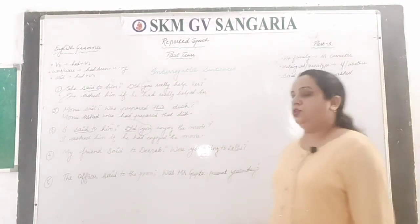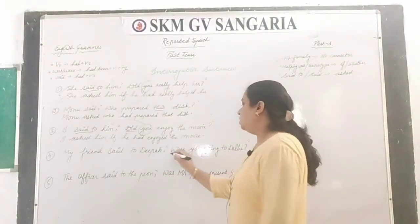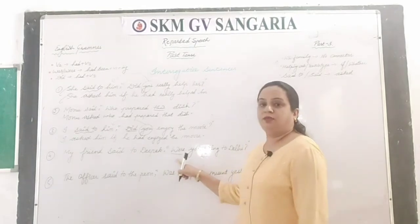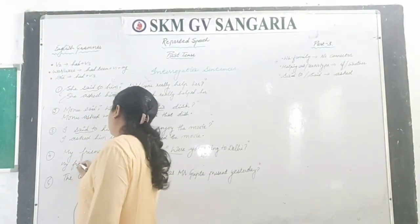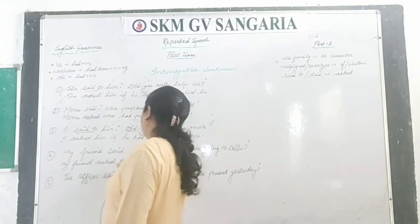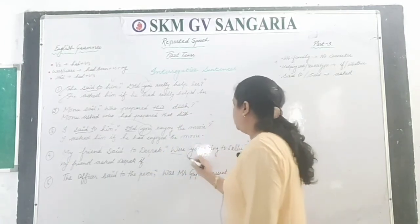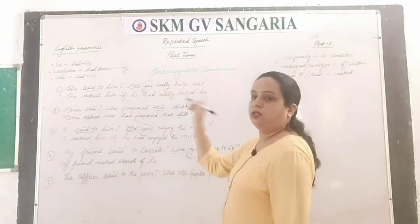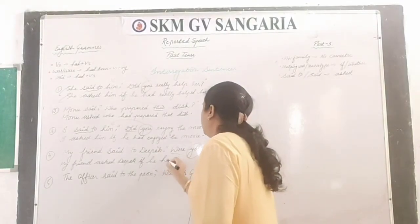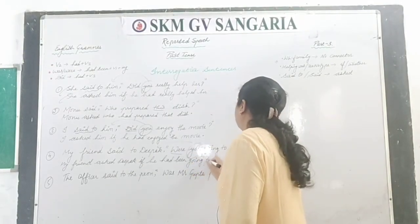My friend said to Deepak, 'Were you going to Dali?' This starts with a helping verb, not WH-family. Answer: my friend asked Deepak if — 'you' changes to 'he', Deepak is 'he'. 'Were going' changes to 'had been going'. Answer: my friend asked Deepak if he had been going to Dali.